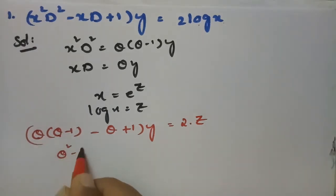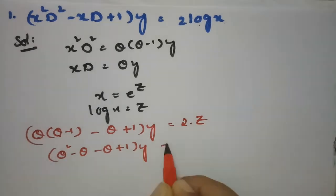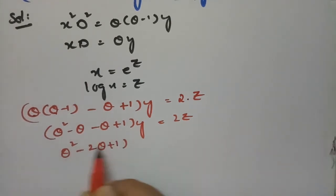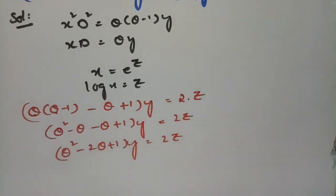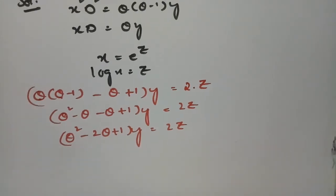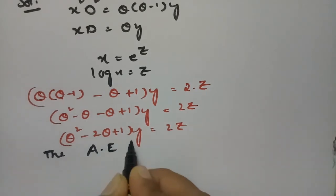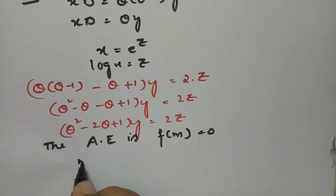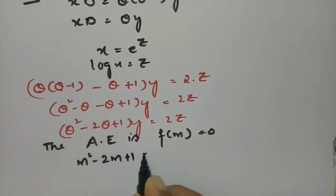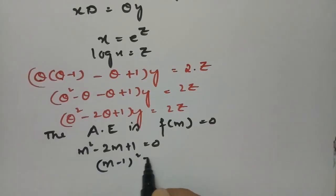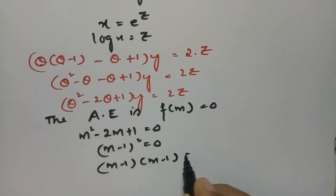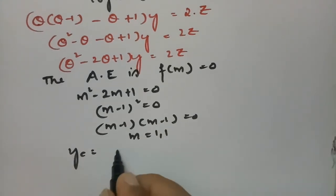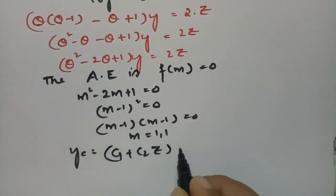After expansion, this becomes (θ² - 2θ + 1)y = 2z. Now I write the auxiliary equation f(m) = 0. Replacing θ with m: m² - 2m + 1 = 0, which is (m-1)² = 0, giving m = 1, 1 (repeated roots). Therefore, the complementary factor is yc = (c1 + c2·z)·e^z.